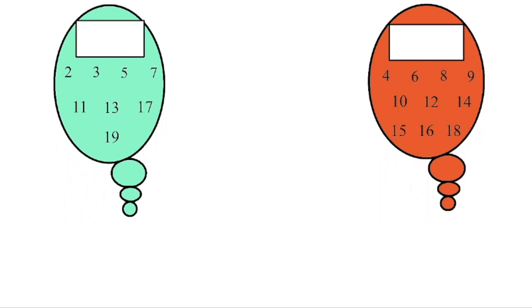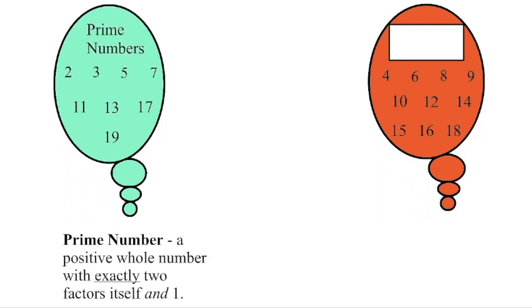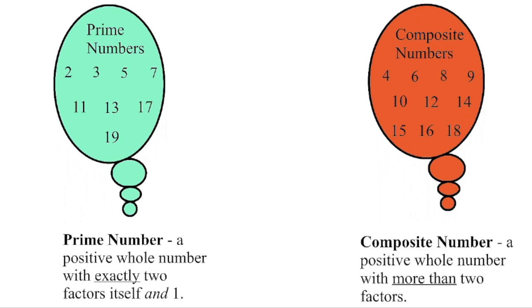The numbers over here on the left are what we refer to as prime numbers. They are positive whole numbers — so they are natural numbers — and they have exactly 2 factors: 1 and itself. The numbers over here on the right are what we call the composite numbers. They are also positive whole numbers, so they are natural numbers, with more than 2 factors. We can get them into multiple configurations of rectangles.